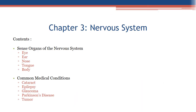Welcome to South Georgia Career Center Medical Assistant Course, Chapter 3: Nervous System. Contents in this chapter are sense organs of the nervous system: eye, ear, nose, tongue, body; and common medical conditions: cataract, epilepsy, glaucoma, Parkinson's disease, and tumor.